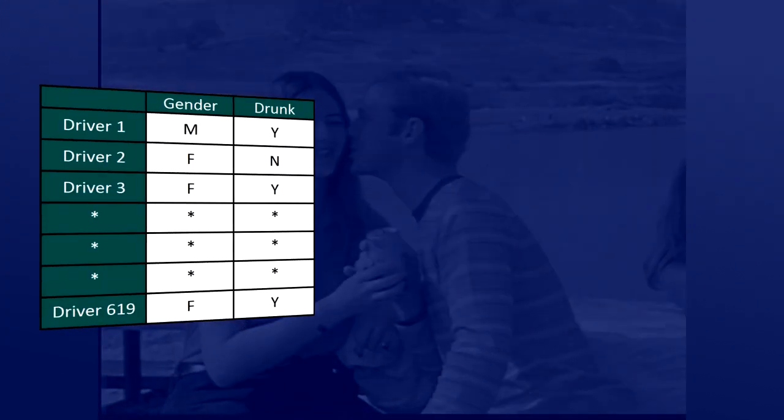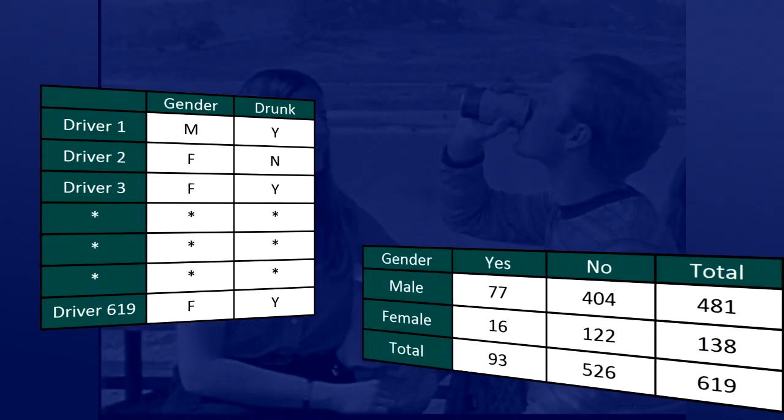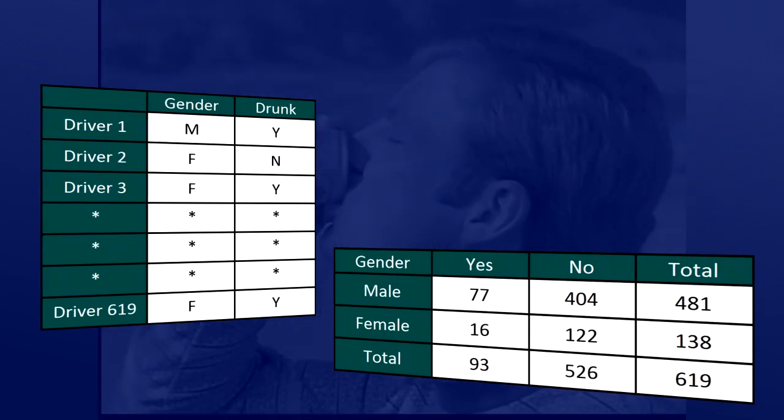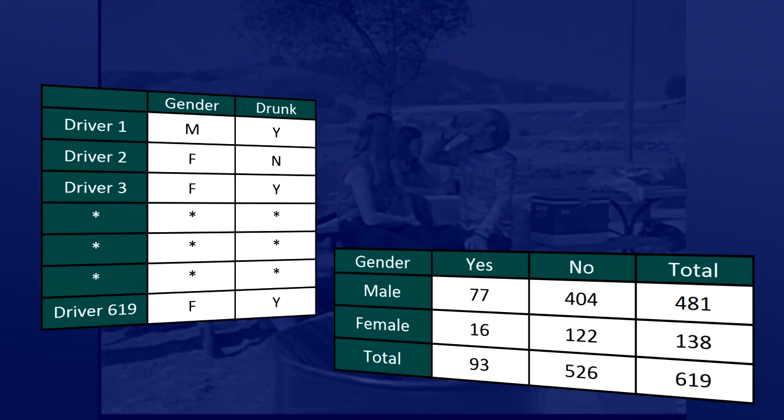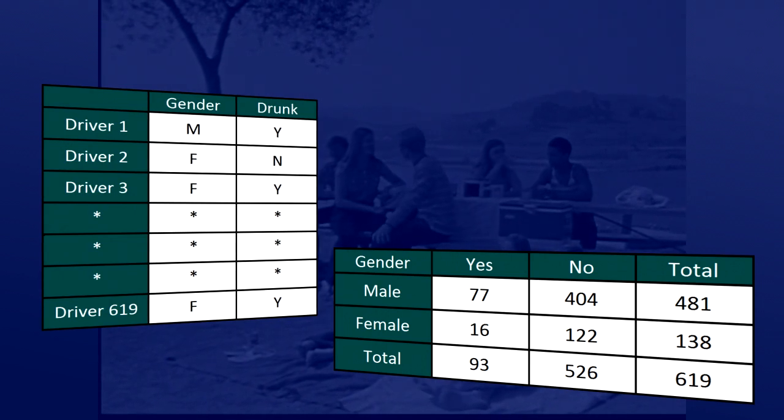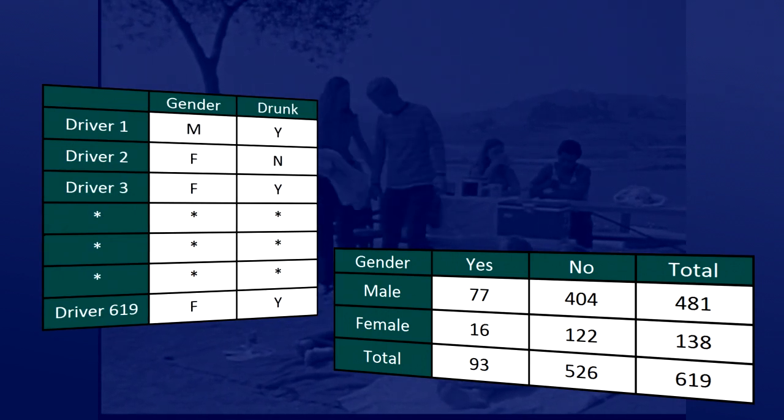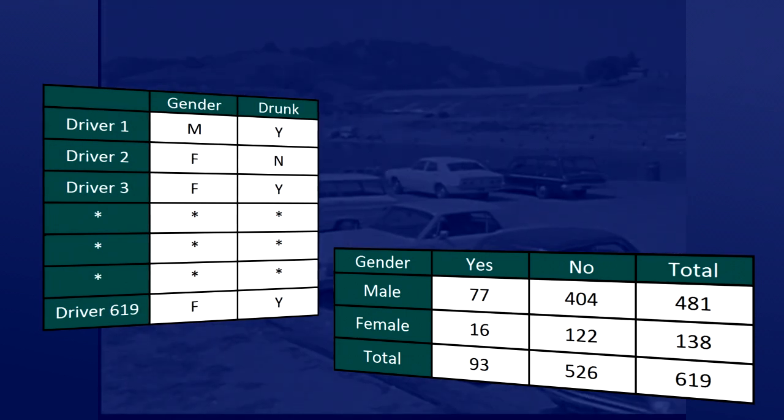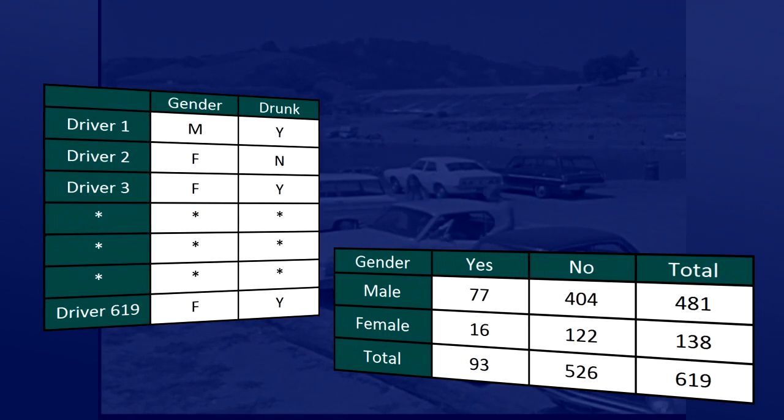On the left, you can see what the collected data look like. And on the right is a two-way table summarizing the observed counts in the roadside survey. Our task is to address whether these results provide evidence of a significant or statistically meaningful relationship between gender and drunk driving. Both variables are two-valued categorical variables, and therefore our two-way table of observed counts is a two-by-two.